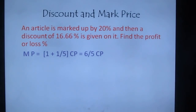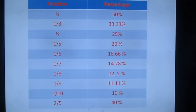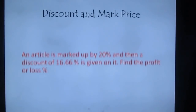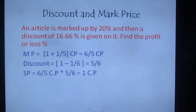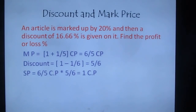Now, discount is 16.66% = 1/6. Since it's a discount, we subtract: (1 − 1/6) = 5/6. Selling price = Marked Price × discount factor = (6/5 × CP) × (5/6). All numbers cancel out, giving SP = 1 × CP.